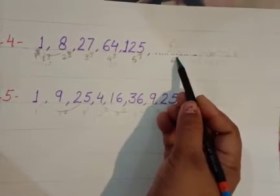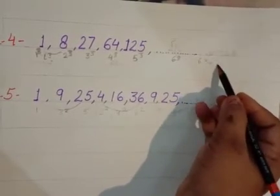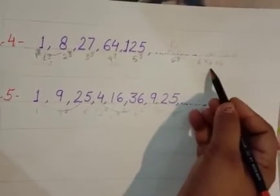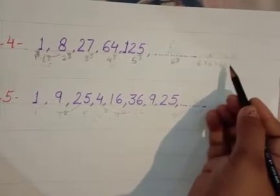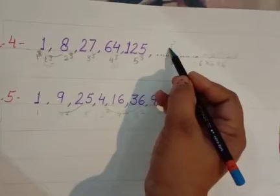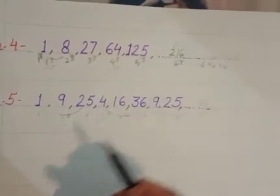Now you have to solve this answer. You have to multiply 6 three times. See: 6 multiply 6 multiply 6. 6×6 = 36, and 36×6 = 216. The right answer is 216. Clear beta?